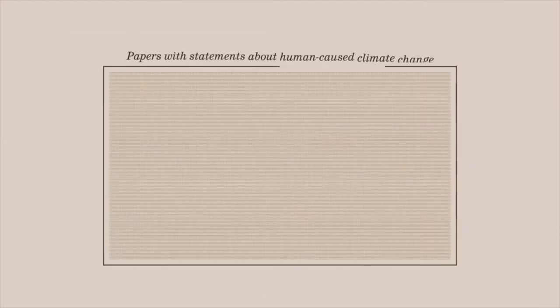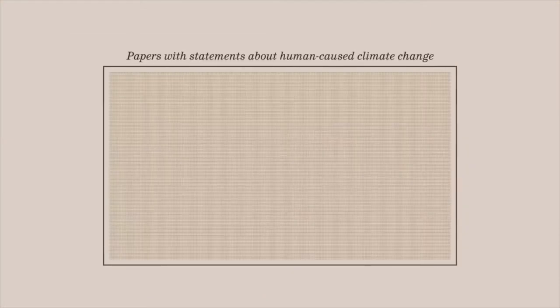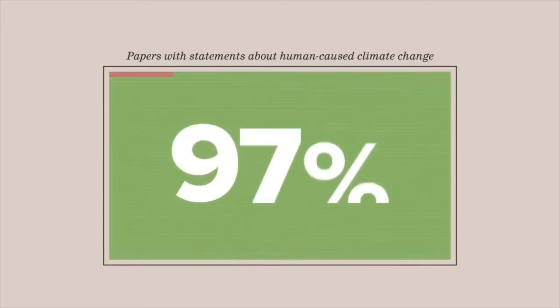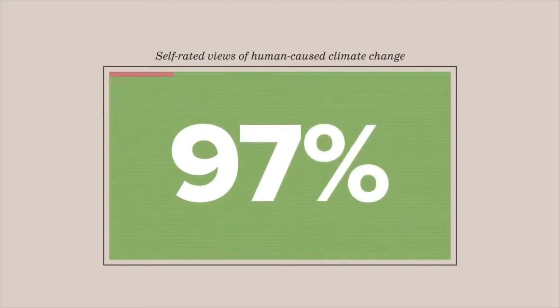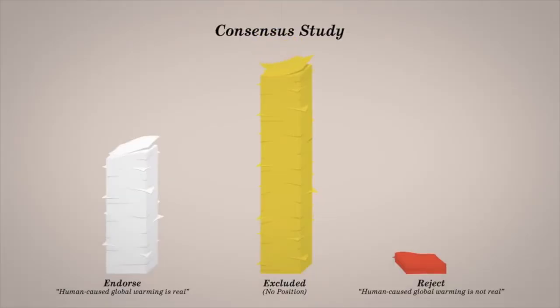This was caused and created by Naomi Oreskes in 2004, who performed a survey of 928 peer-reviewed climate papers published between 1993 and 2003 under the IPCC with some interesting sponsors. She claims to have found that none rejected the human cause of global warming.